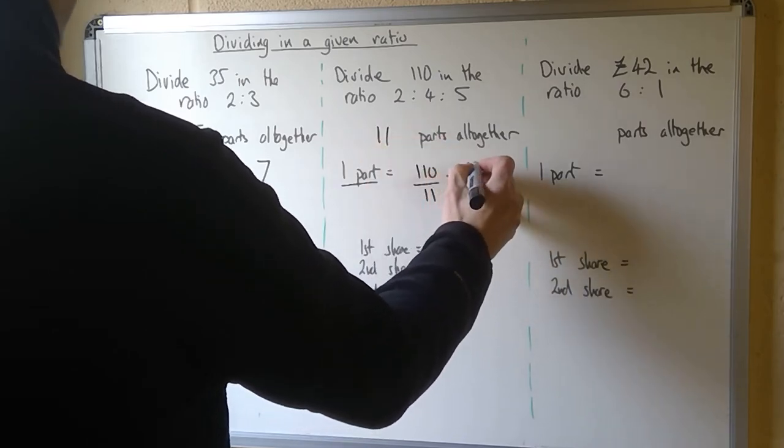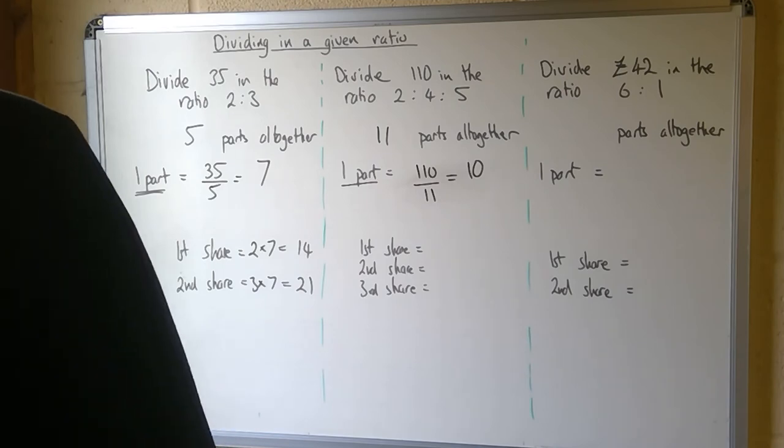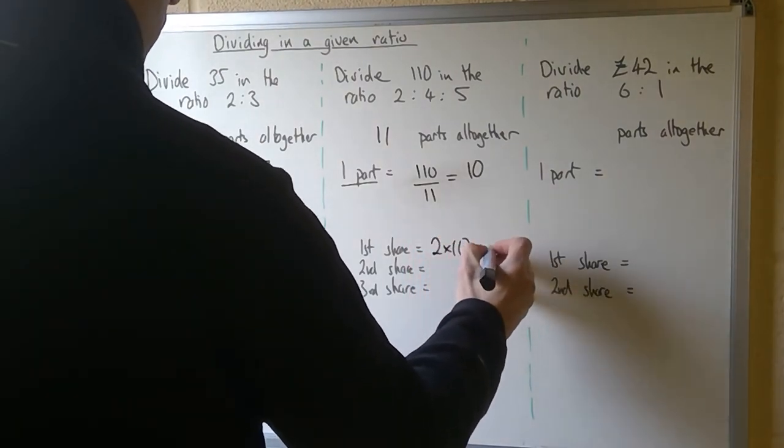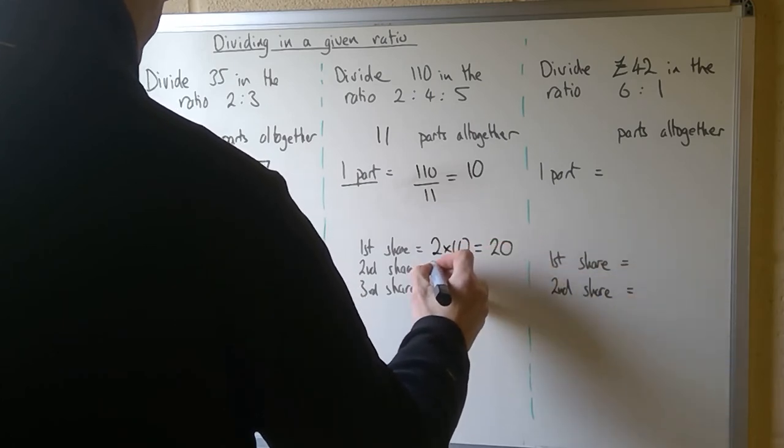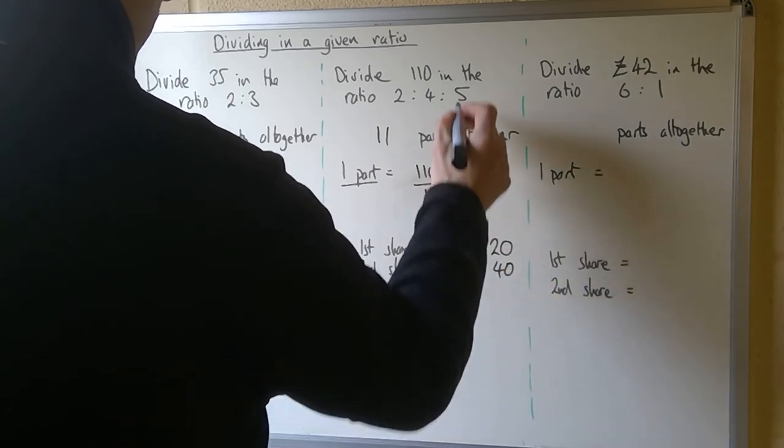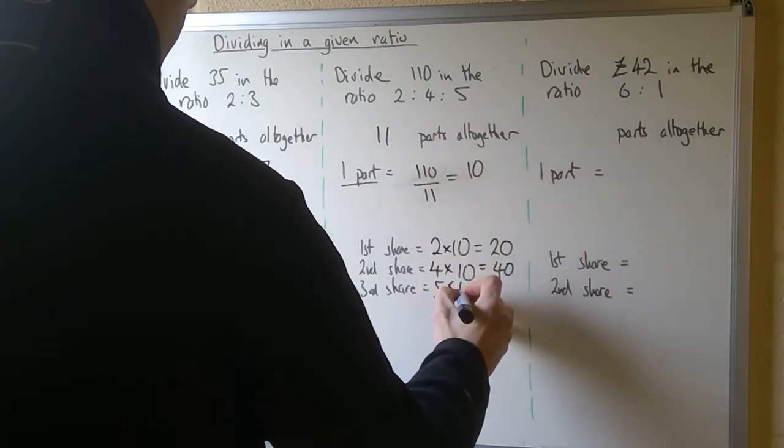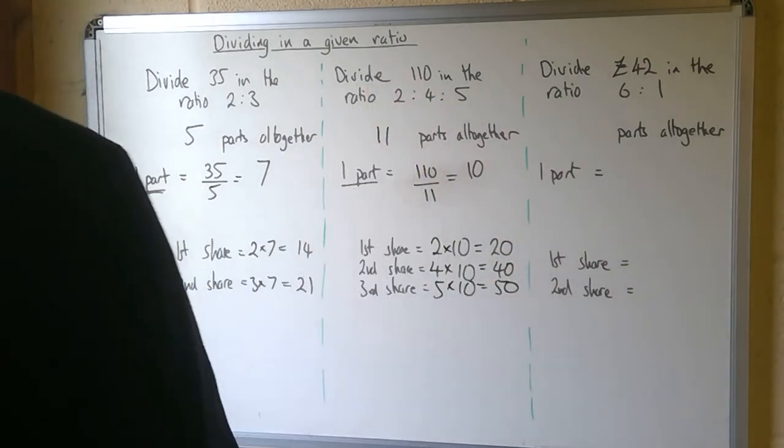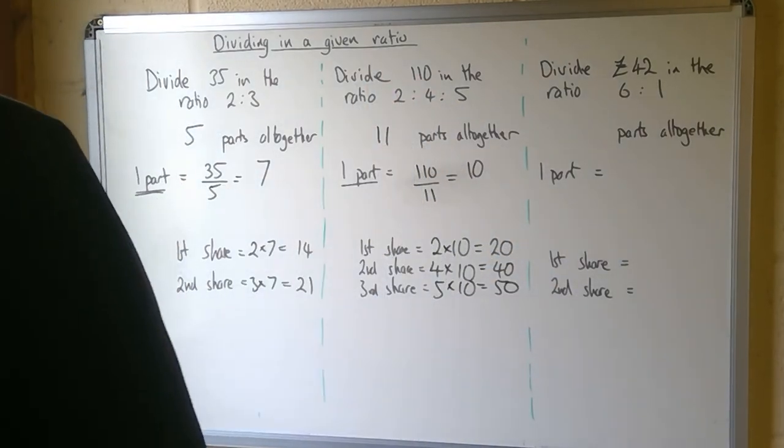So one part is 10, so nice simple numbers in this case. So the first share will be two lots of 10, which is 20. The second share, four lots of 10, which is 40. And the third share, five lots of 10, which is 50. 50, 40, 20 go back to make 110, so I'm pretty sure I've done it correctly.